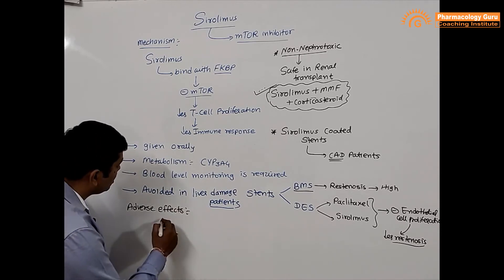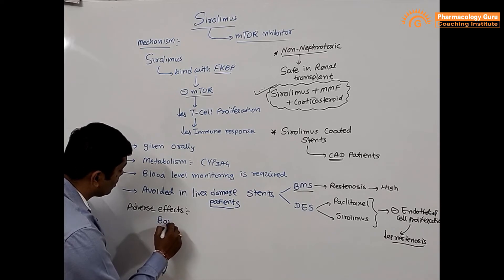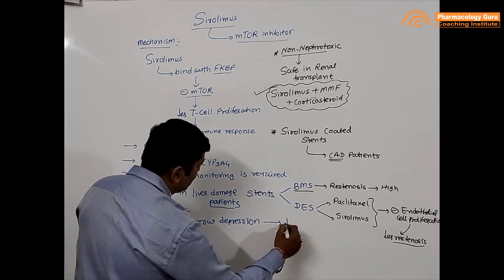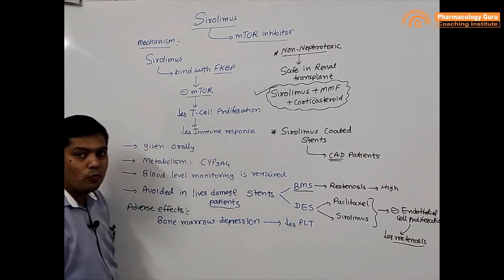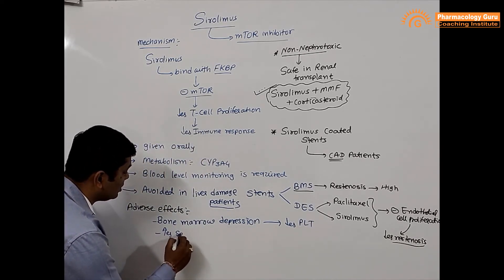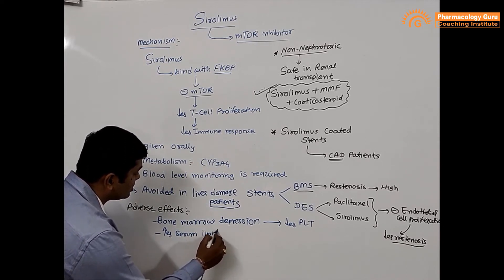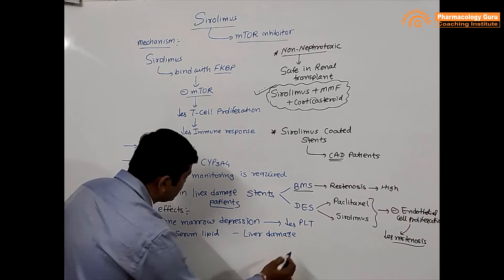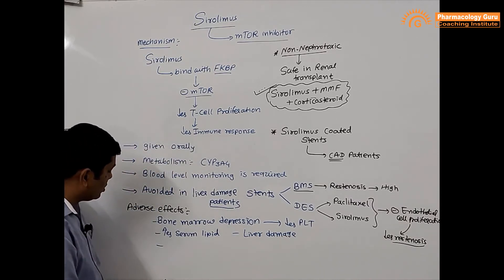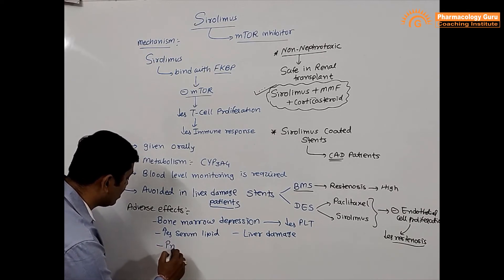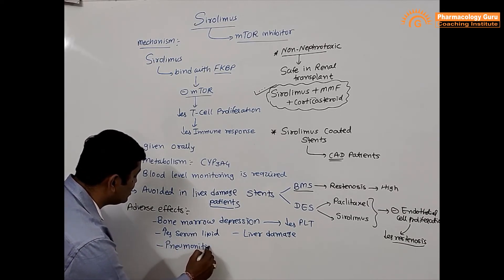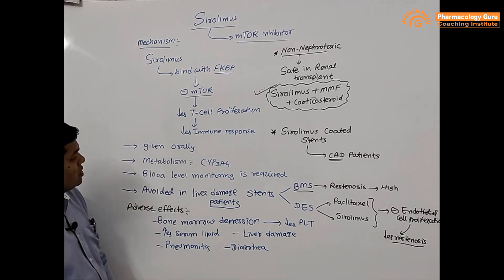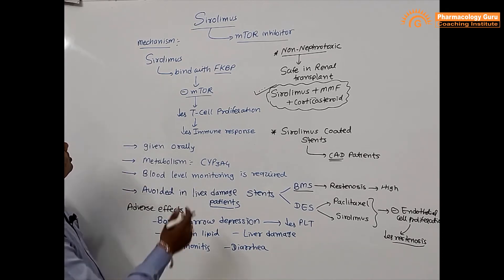The adverse effects of Sirolimus include: bone marrow depression — specifically reducing platelet counts, which is called thrombocytopenia; increased serum lipid levels; liver damage; pneumonitis; and diarrhea. These are the major adverse effects of Sirolimus.